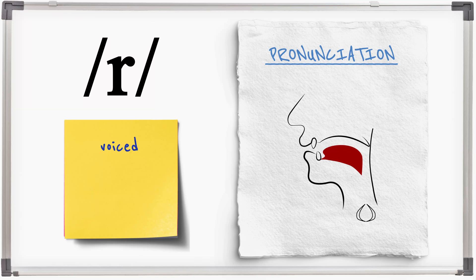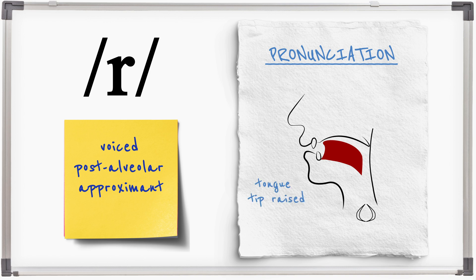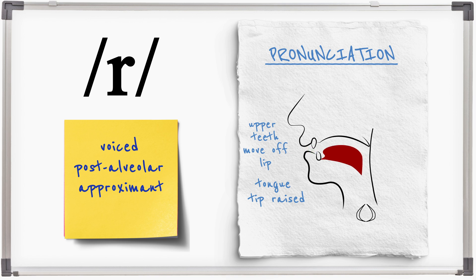R is a voiced, post-alveolar approximant, made by raising the tip of the tongue behind the alveolar ridge and moving it forwards without touching the roof of the mouth. Additionally, the upper teeth can move away from the lower lips. Air is allowed to escape throughout the sound — it is vowel-like. The vocal folds vibrate throughout.